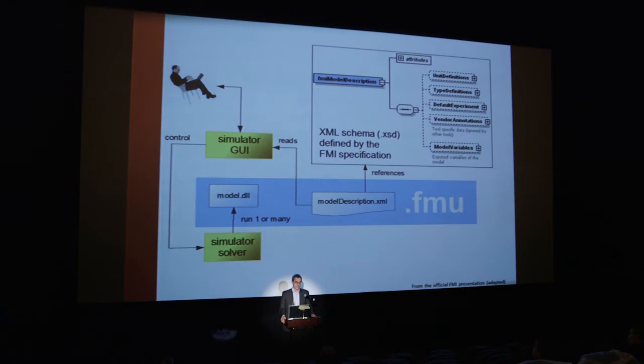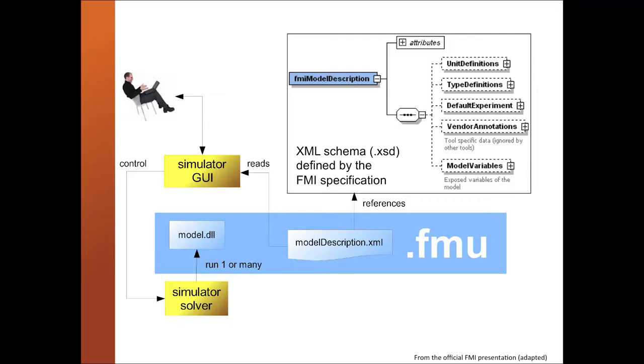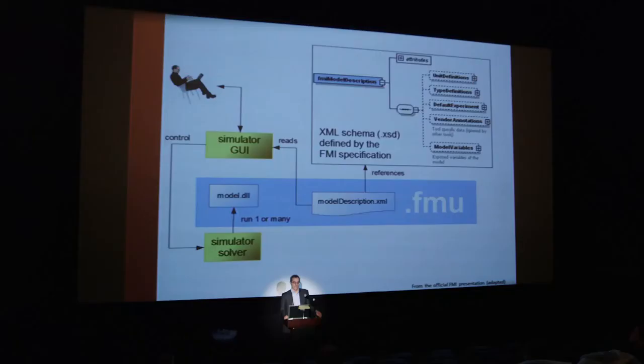The FMU has two main parts: the model DLL and the model description file in XML. The model description file references an XML schema (XSD) defined by the FMI specification, which makes it possible to systematically work with all the definitions and metadata contained in the FMU. A simulator GUI would read the XML file, the user can interact with that, the GUI controls the solver, and the solver runs one or many DLLs or FMUs in the model. That is the rough structure of the FMI interface.